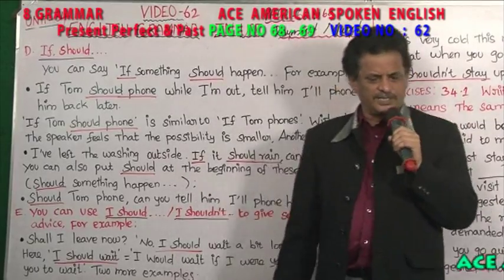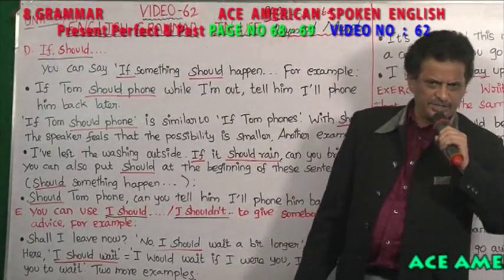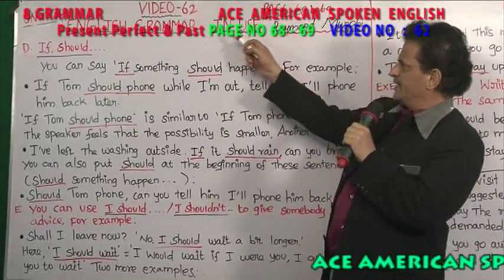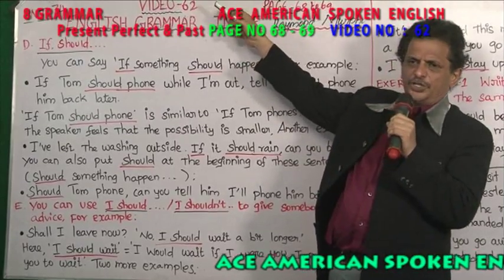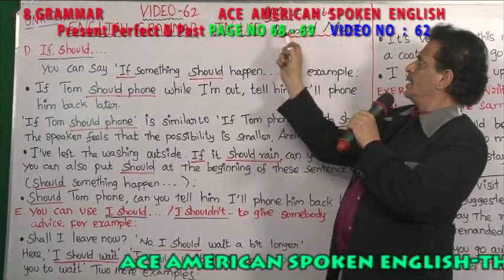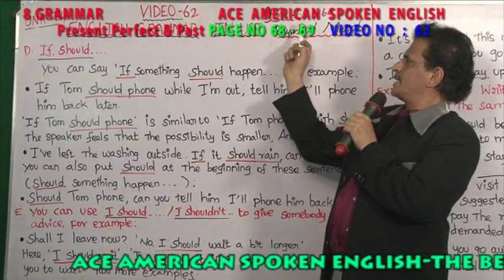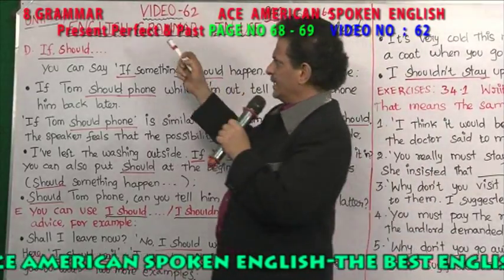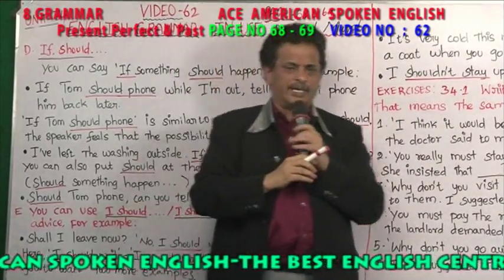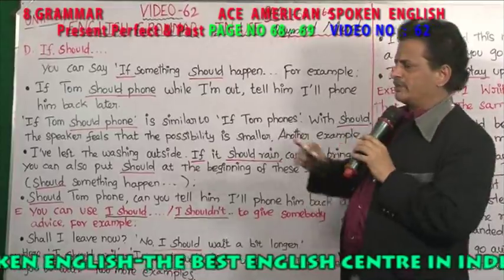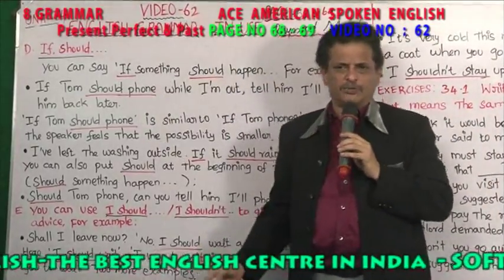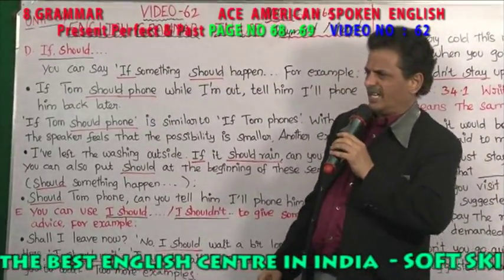Dear friends, welcome to ASA American English Centre. This is Raymond Murphy's English Grammar in Use, video number 62, pages 68 to 69, Unit 34, Cambridge University Press. We have covered modal verbs: should, could, must, would, may, and might.